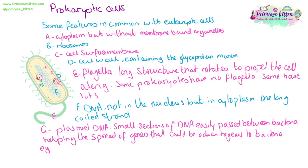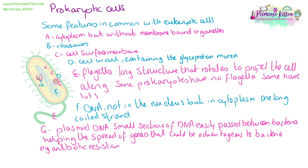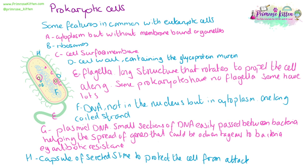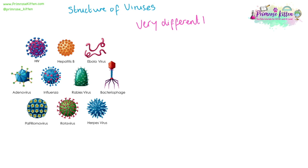These genes could be advantageous to the bacteria — for example, antibiotic resistance. They may also have capsules or secreted slime on the outside to protect the cell from attack. Viruses are prokaryotic but very different to bacteria, and they all have very different structures to each other. A bacteriophage looks very different to an Ebola virus, which looks very different to an adenovirus.